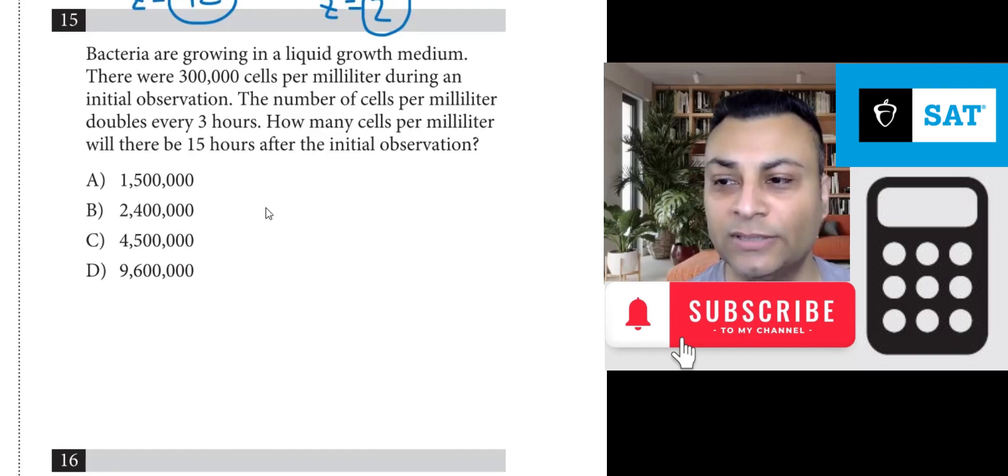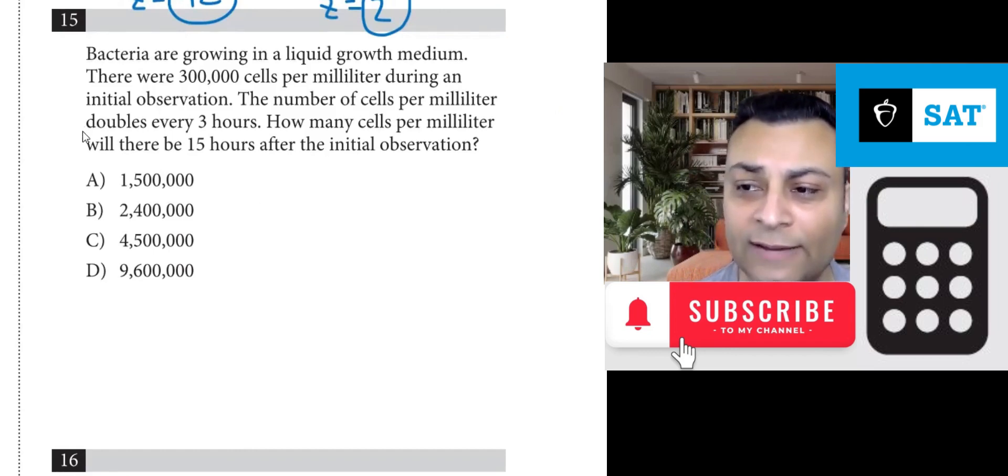How many cells per milliliter will there be 15 hours after the initial observation? Okay. It's going to double every three hours.